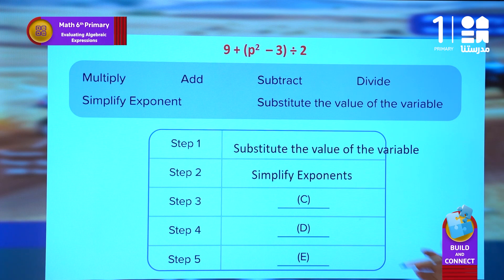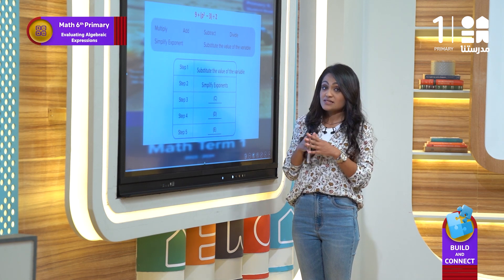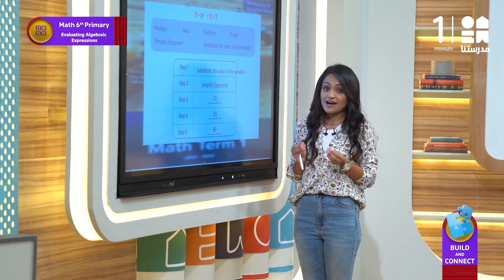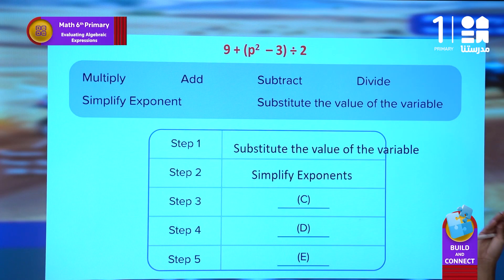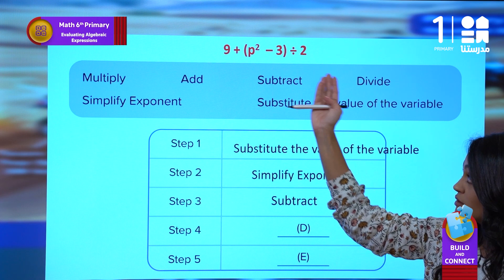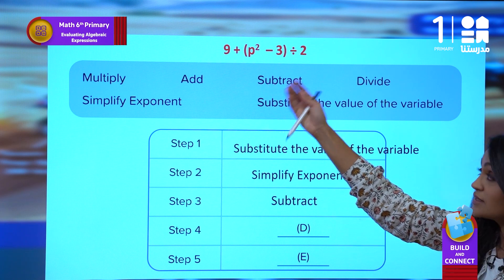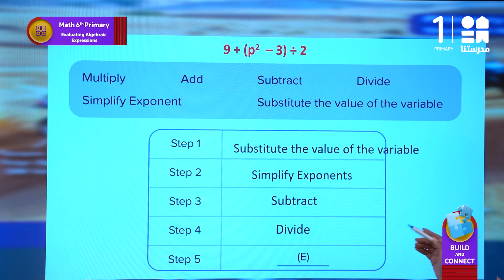To do the operations within the parentheses, we can see that we have subtraction here, so this will be step three: subtract. Then the remaining operations in the expression are addition and division. We will do the division operation first, so that is step four. And the last step is addition, which will be step five.